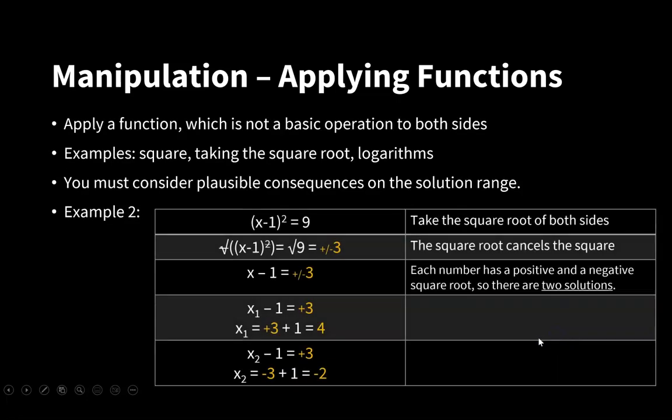In example 2, we have x minus 1 to the power of 2 equals 9, and we want to get rid of the power of 2 or this square. So what we can do is to take the square root of both sides. The square root of to the power of 2 means that we can remove the square, and we're left with x minus 1. On the right side, the square root of 9 is either plus 3 or minus 3.